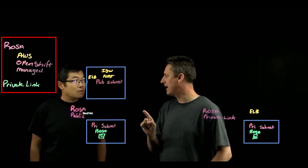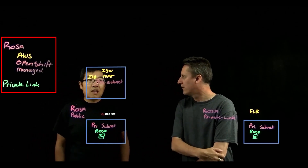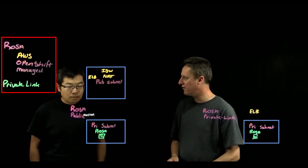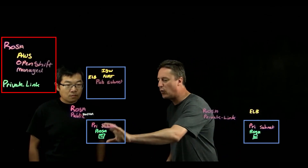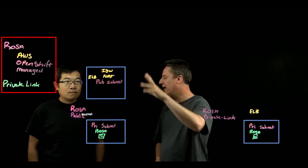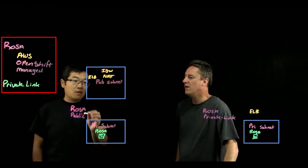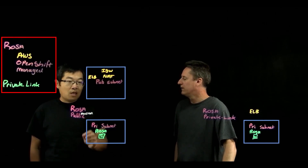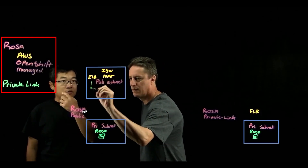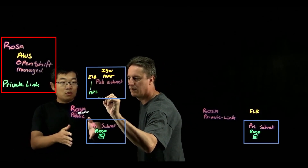This is an internet-facing elastic load balancer. The OpenShift cluster itself — the control plane, the infrastructure nodes, the worker nodes — they're all inside the private subnet. There's nothing in the public subnets except for the load balancer itself. The load balancer is basically in front of the ROSA cluster API, and that's where the SREs actually get access — the ingress point to the ROSA cluster.